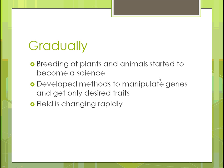Gradually they started getting more scientific, and scientists started using genetics to breed plants and animals — that became more of a science. They looked at different traits and developed methods to change genes to ensure only the desired traits came through. The field is changing tremendously in both plants and animals, getting better and better every year in terms of what we're able to create.